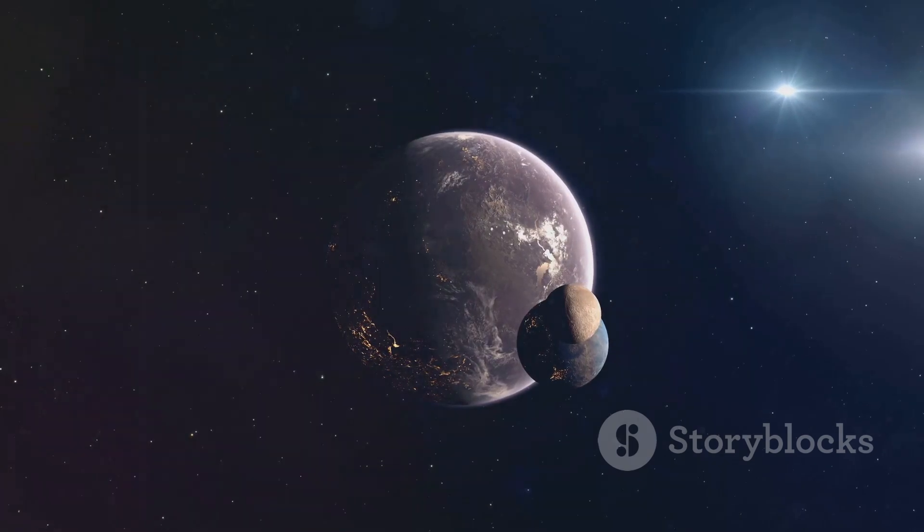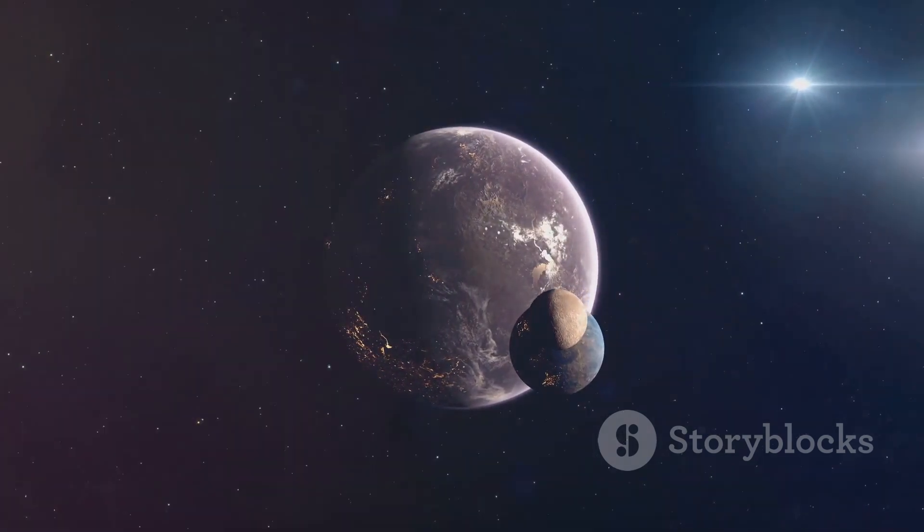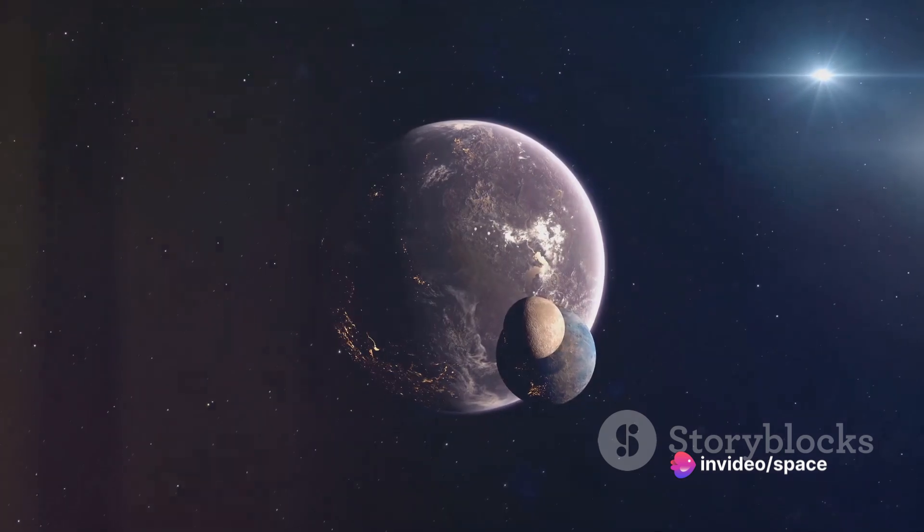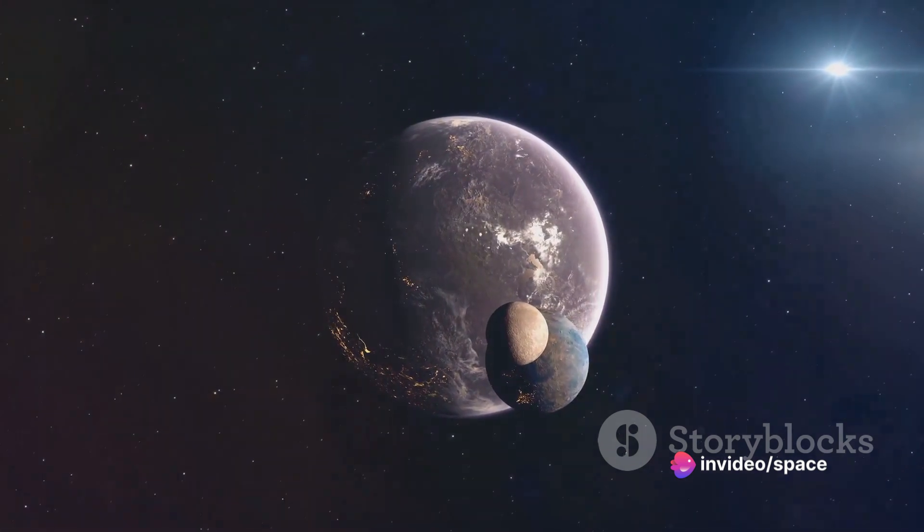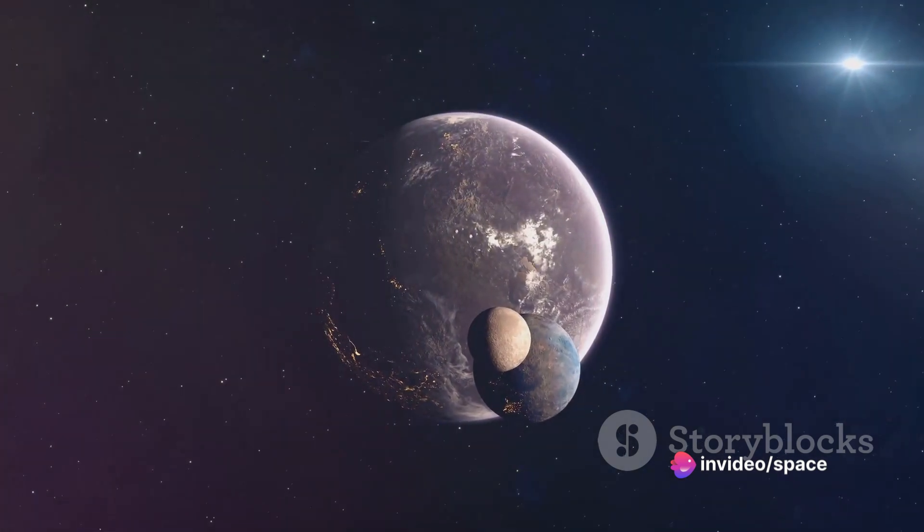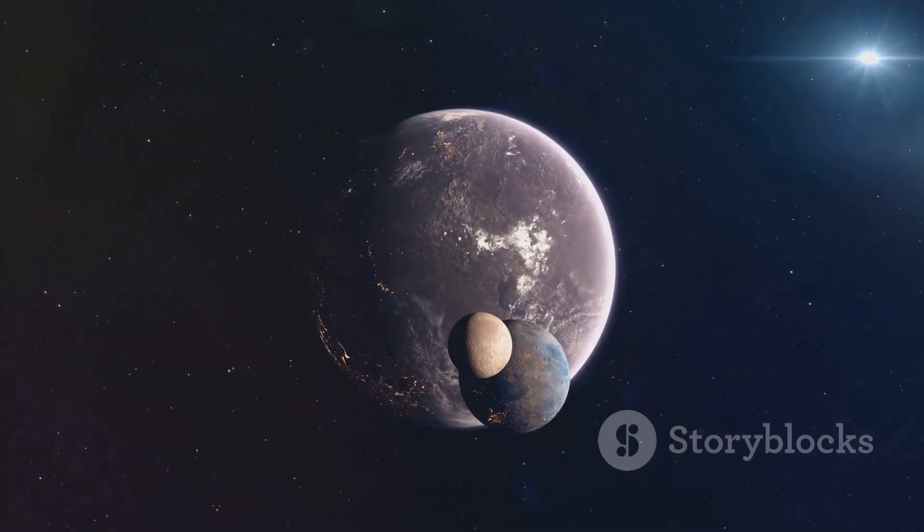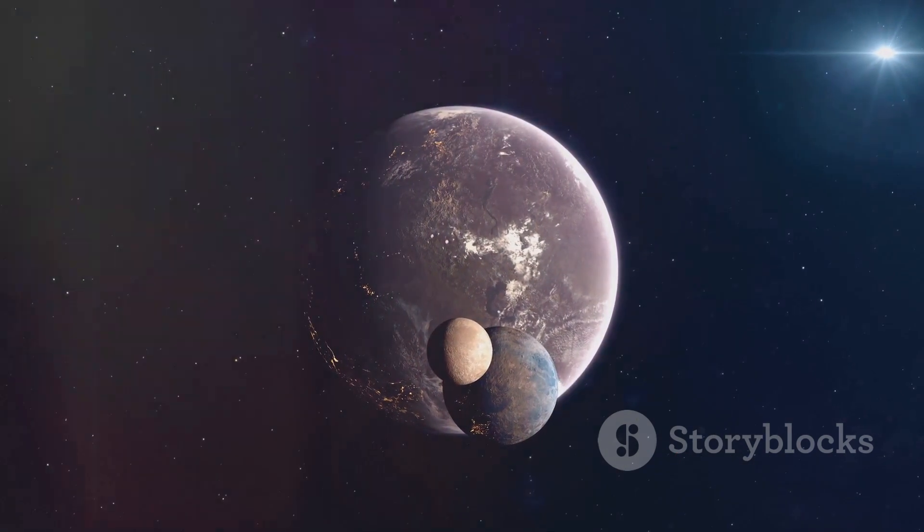Kepler-22b is located in the habitable zone of its star, a region often referred to as the Goldilocks zone. This is the perfect distance from a star where conditions could be just right for life as we know it to exist, not too hot, not too cold.